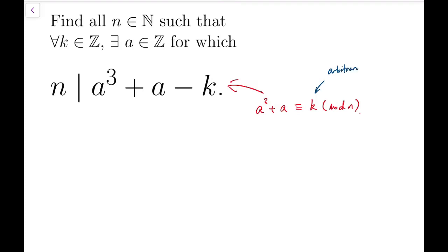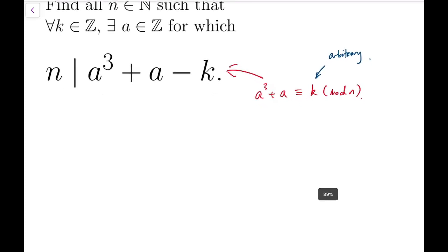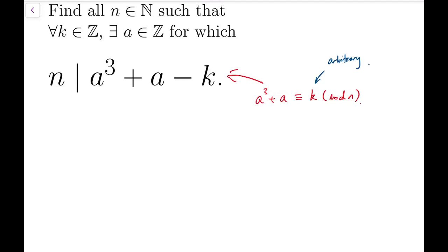And now because this k is arbitrary, so I can further translate this statement to a³ + a, as I span over a to be integers, this set I can replace it by, in other words, it's a complete residue system.